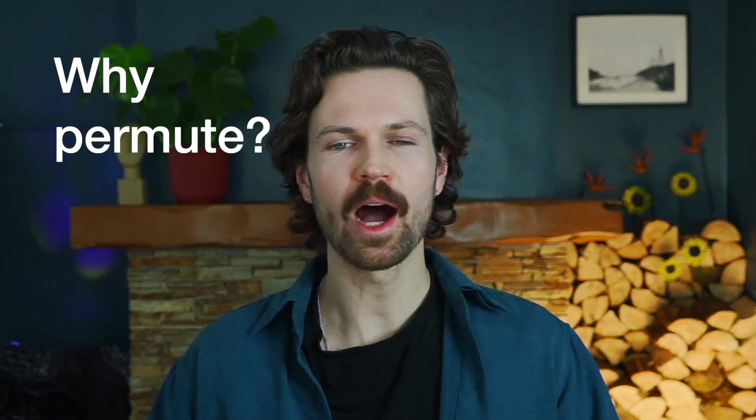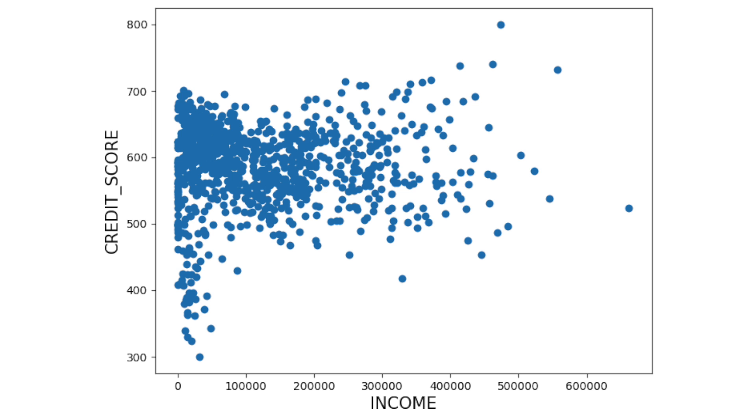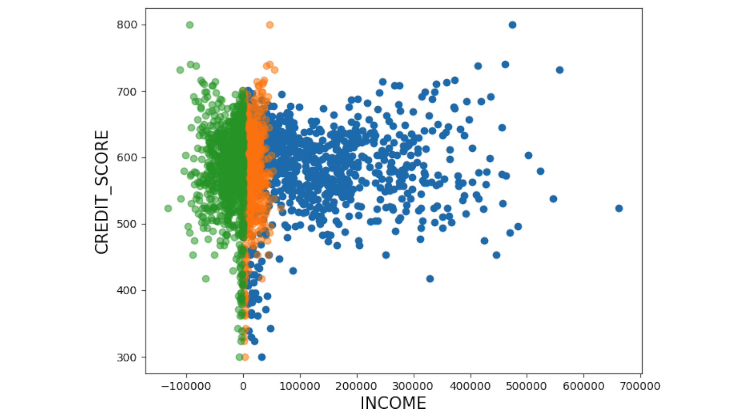Let's talk about the logic behind some of the choices we made and the limitations of this approach. The first question is why we permute. You may be tempted to replace feature values with randomly sampled values. However, we permute a feature because it is important to sample from the same distribution as the original feature values. This ensures that permuted values are realistic and representative of the variability observed in the actual dataset. If we sample from a different distribution, we may introduce unrealistic scenarios that could lead to misleading importance scores. For example, replacing income values with smaller-than-average or negative values may lead the model to only predict low credit scores, skewing the importance score.